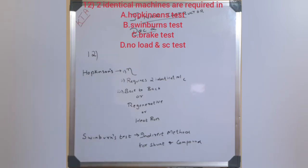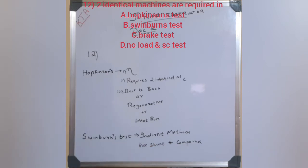Swinburne's test is an indirect method used mainly for shunt and compound DC machines. There are two important points for Swinburne's test: it is an indirect method and it is applicable to shunt and compound machines.